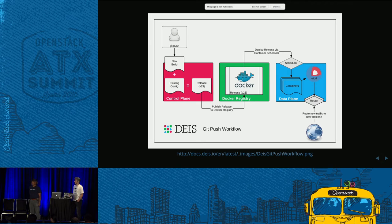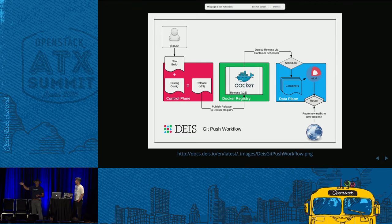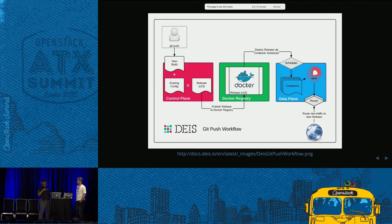This is the workflow. If you've used Heroku or any other platform as a service, it might seem very familiar. You push some code into Git, that's going to spin off a build, which is stored in the Docker registry. Each release is snapshotted, and that is eventually deployed with traffic routed to that particular container. If you want to roll back or go to a specific version, you can do that very straightforwardly because all of those are in the Docker registry.